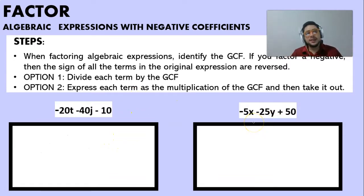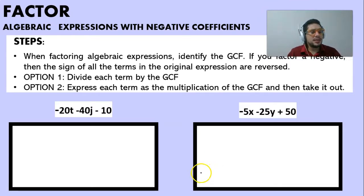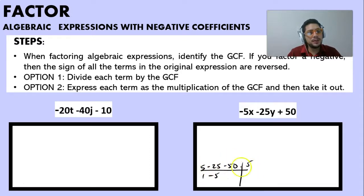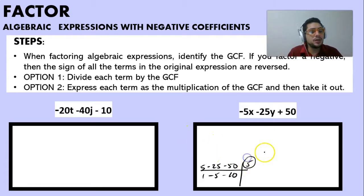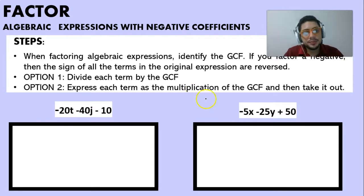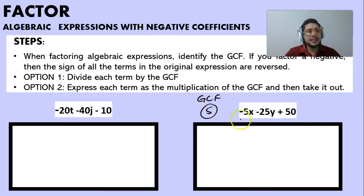In the second problem we have minus 5X, minus 25Y, plus 50. The greatest common factor is 5, because we have 5, 25, and 50. Dividing: 5 divided by 5 is 1, 25 divided by 5 is 5, and 50 divided by 5 is 10. Since one of the results is 1, there's no further common factor, so the GCF is 5. Two out of three terms are negative, so we can use either positive 5 or negative 5.